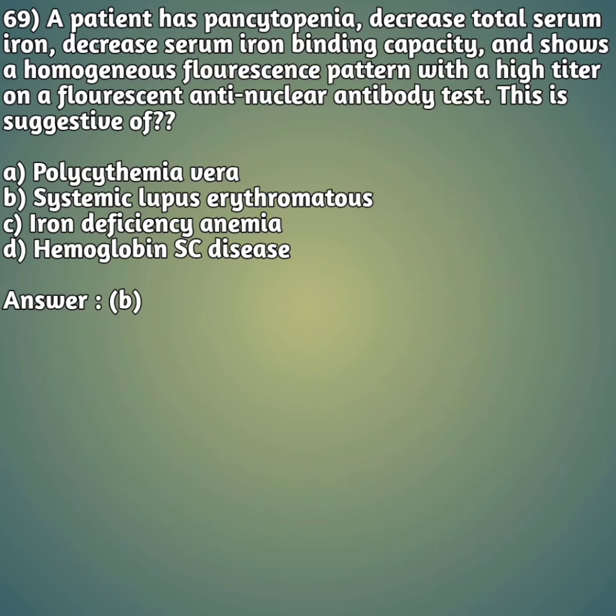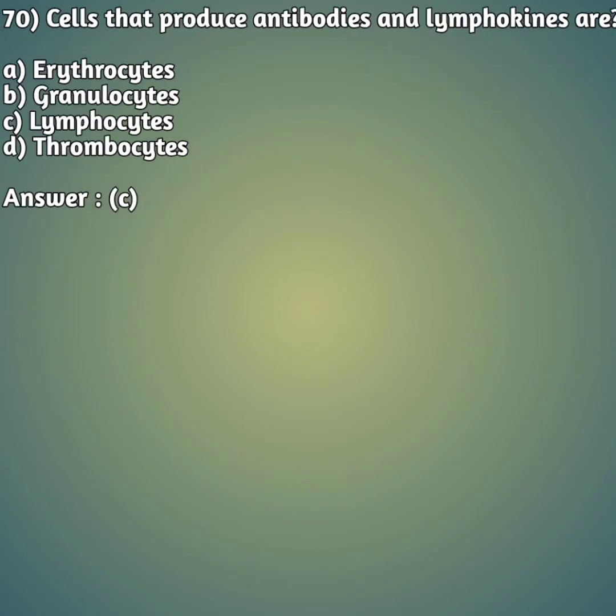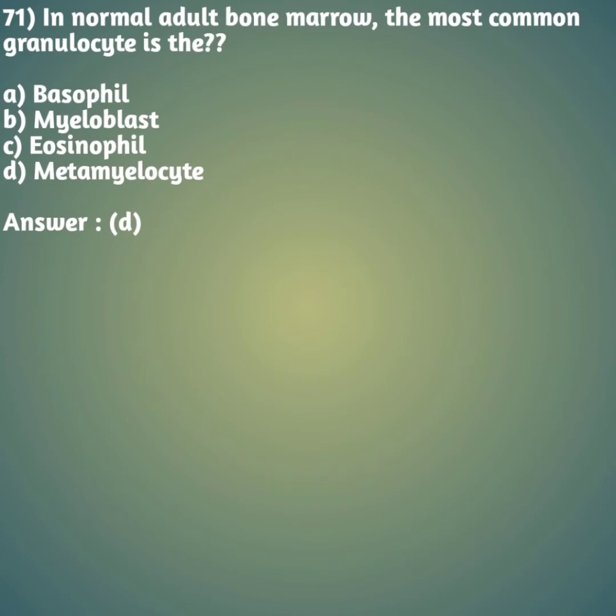Moving on to our 70th question: cells that produce antibodies and lymphokines are - option A: erythrocytes. Option B: granulocytes. Option C: lymphocytes. Option D: thrombocytes. The right answer is answer C - lymphocytes.